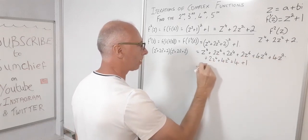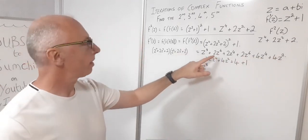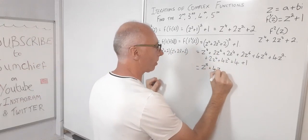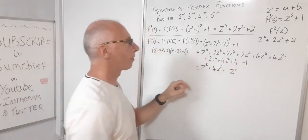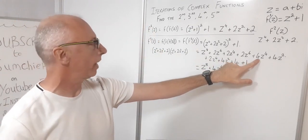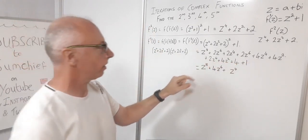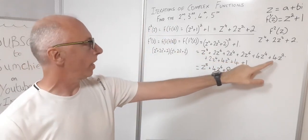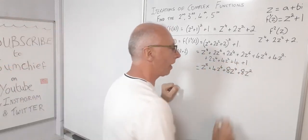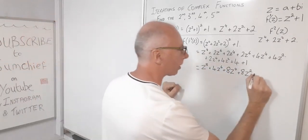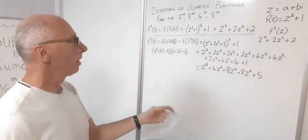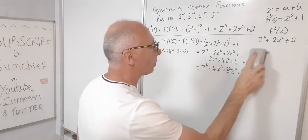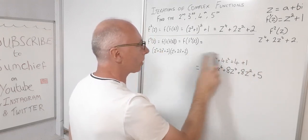Collecting all terms: z⁸ term is just z⁸. For z⁶: 2 + 2 = 4, giving +4z⁶. For z⁴: 2 + 4 + 2 = 8, giving +8z⁴. For z²: 4 + 4 = 8, giving +8z². Constants: 4 + 1 = 5. So our third iteration is: f₃(z) = z⁸ + 4z⁶ + 8z⁴ + 8z² + 5.